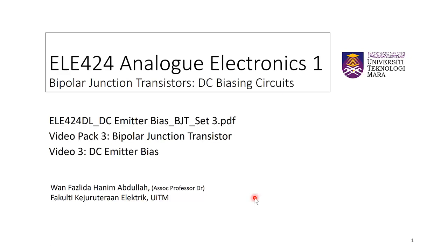Welcome back to another video for ELE 424 Analog Electronics 1, under the topic bipolar junction transistors. We are at DC biasing circuits. The previous video was on the simplest configuration, the fixed bias circuit. We are now ready to go on to the next configuration, which is the emitter stabilized bias for BJT DC biasing.